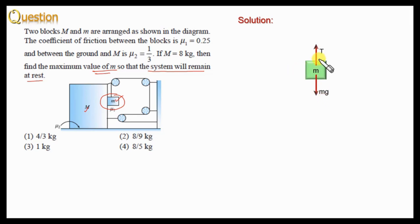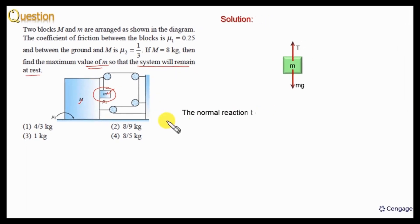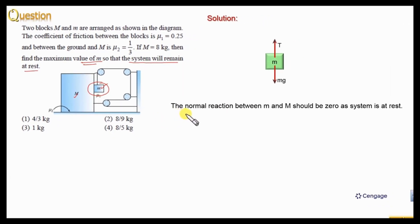The vertical force mg is balanced by capital T. If it is not moving in the horizontal direction, that means the horizontal force acting on small m should be zero. The only possibility of a horizontal force on small m is the normal reaction, so the normal reaction between capital M and small m should be zero. If normal reaction is zero, that means friction force will also be zero — there should not be any friction between the surface of capital M and small m.